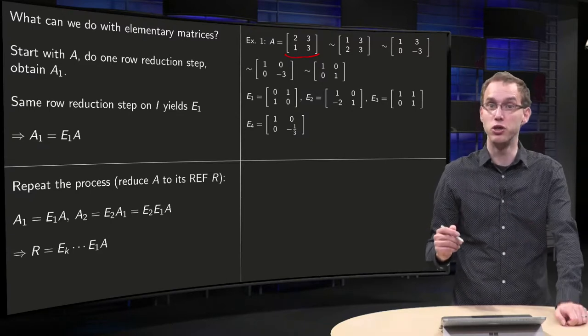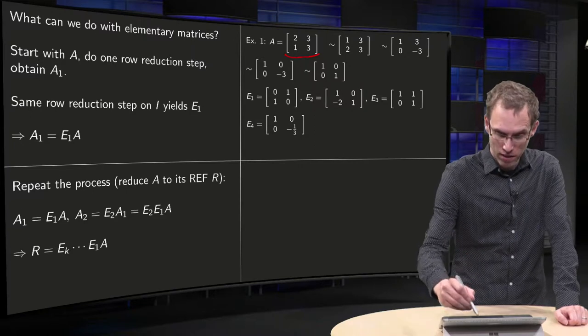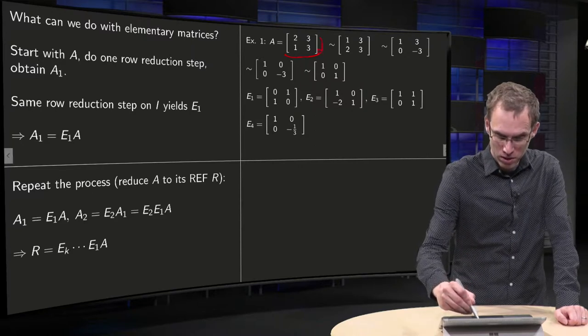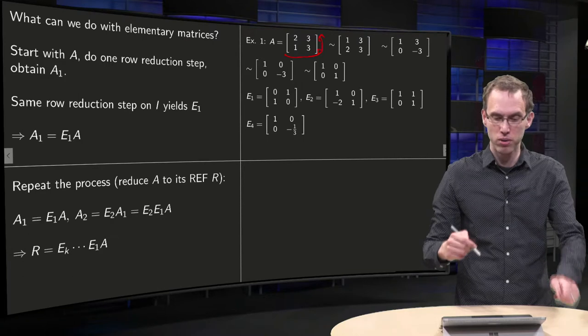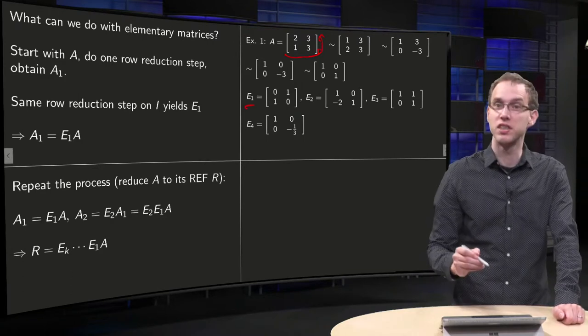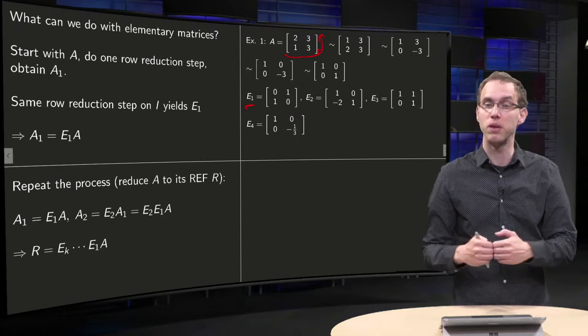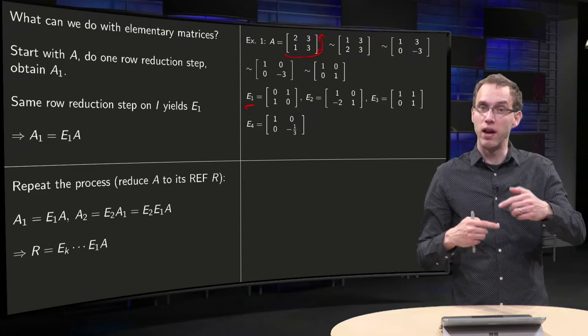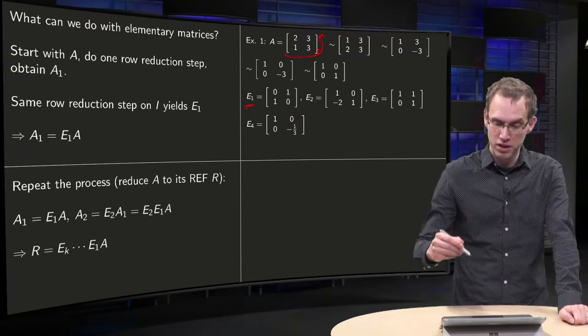From that we can deduce our elementary matrices. Well, first it would be good to interchange the two rows, which yields our elementary matrix E1, which is also obtained by interchanging the two rows of the identity matrix.